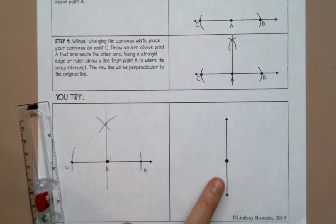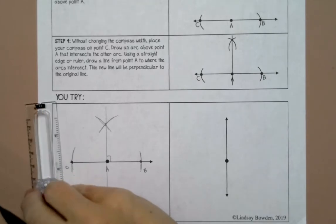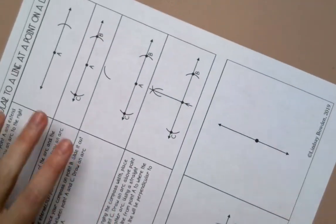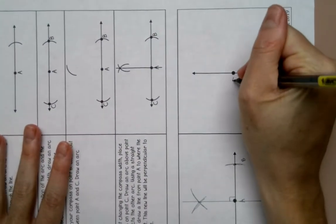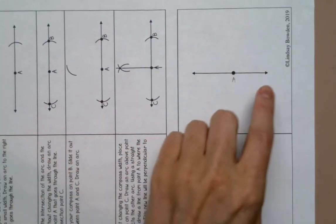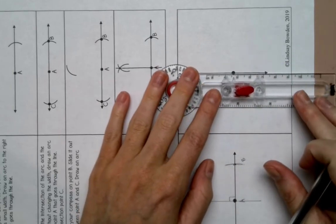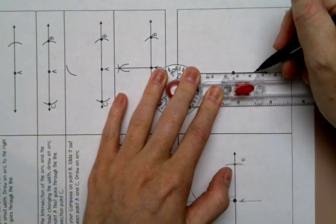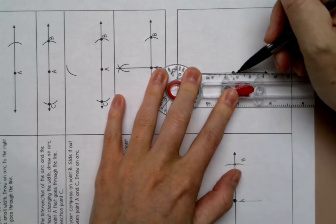Alright, if you want to stop the video now and try this one by yourself you can. Okay, so I'm going to turn my paper. I'm going to label this A and I am going to extend this line out. So if you need to do that, that's totally okay, just so that you can make sure that it goes through both sides.